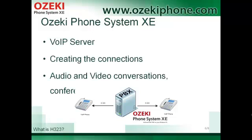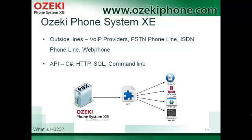Azaki Phone System Axie is a VoIP server that can use the H323 protocol. The purpose of this phone system is to create connections between parties of the conversation. It can manage audio and video conversations and conferences as well. It allows connecting more types of external lines, including a VoIP provider, PSTN or ISDN line, or even a web phone. A web phone is a unique functionality not available in any other VoIP server — it allows website visitors to make calls by only clicking on a link, so they can call any other IP phone very easily.